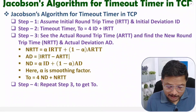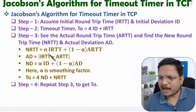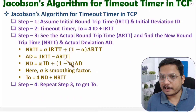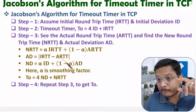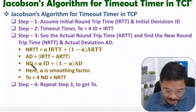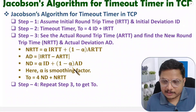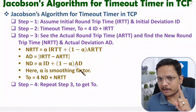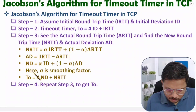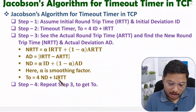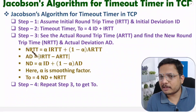Here alpha is the smoothing factor, ranging between 0 and 1; ideally we consider it as 0.5. The actual deviation is the difference between IRTT and ARTT. The new deviation is calculated as: ND = alpha * ID + (1 - alpha) * actual deviation. Based on these, we calculate the timeout timer value: T0 = 4*ND + NRTT. For subsequent packets, we repeat step 3 again and again to get the updated T0 value.